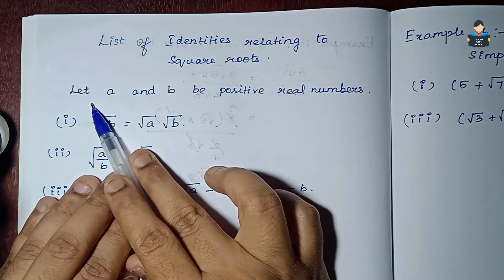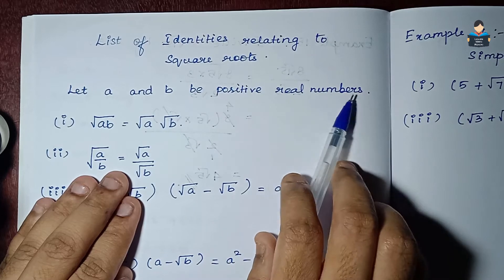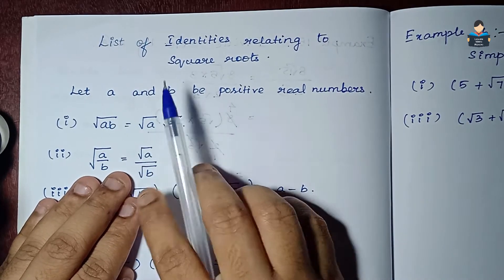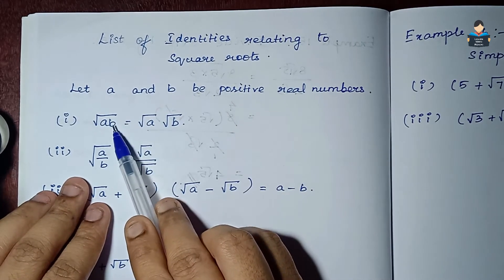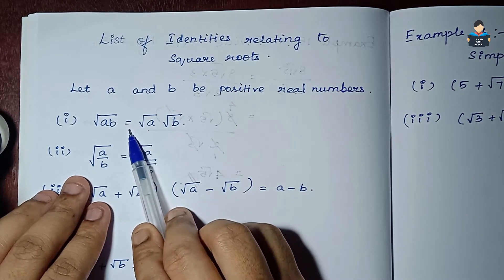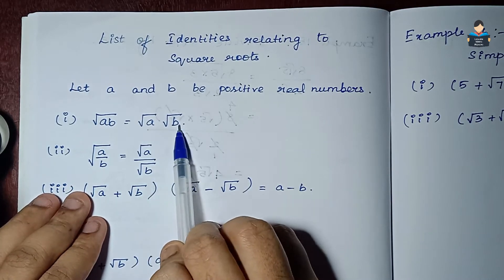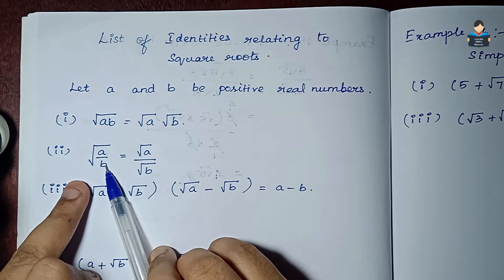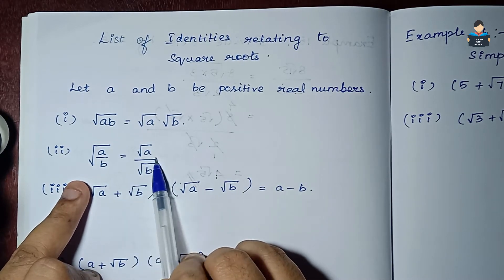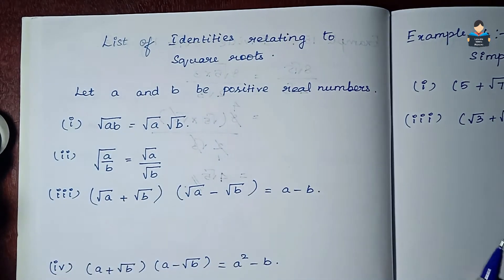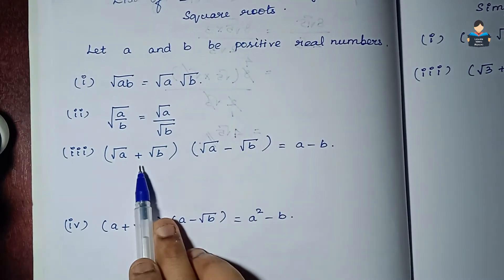Let a and b be positive real numbers. The first identity: square root of a times square root of b equals square root of ab. That is, √a · √b = √(ab).